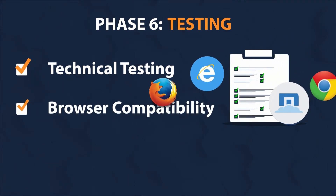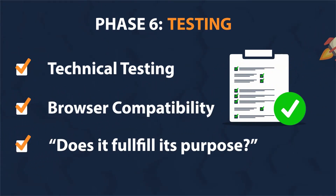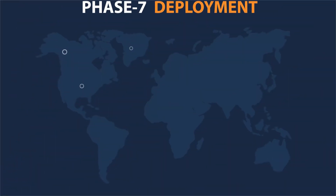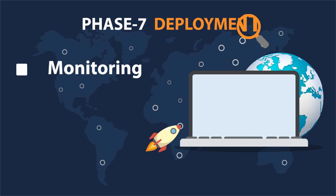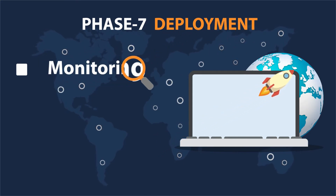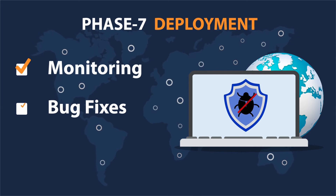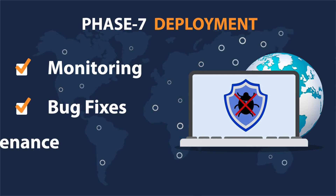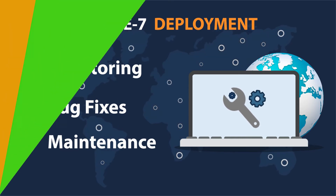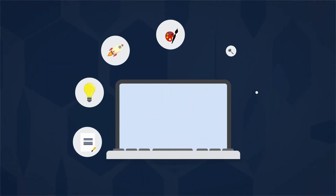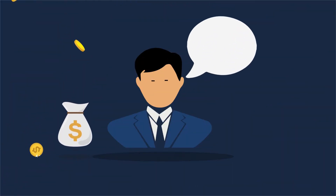Phase seven is deployment — after we launch the site, our job is definitely not done. We always monitor what's happening after the start, enabling us to fix any possible deficiencies through bug fixing. If you want, we can also manage future maintenance and updates for you. As you can see, web design is a very complex process, and we believe this is how websites should be done — and our customers agree.